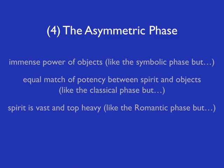Phase number four: the asymmetric phase. Now let's begin to think the current phase of aesthetics — a phase that has been developing since the start of the Anthropocene out of a structural instability internal to the Romantic phase.